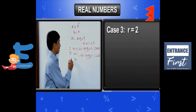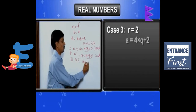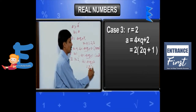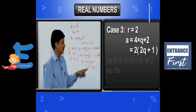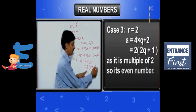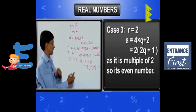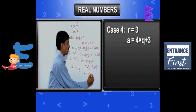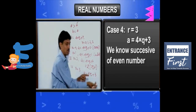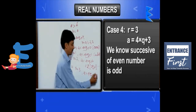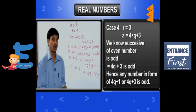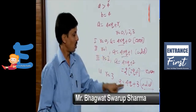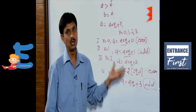Case 3: If R equals 2, then A equals 4Q plus 2, which can be written as 2 times (2Q plus 1). Any multiple of 2 is even. Case 4: If R equals 3, then A equals 4Q plus 3. Since 4Q is even, 4Q plus 3 is odd. We conclude that any number in the form of 4Q plus 1 or 4Q plus 3 is an odd number.